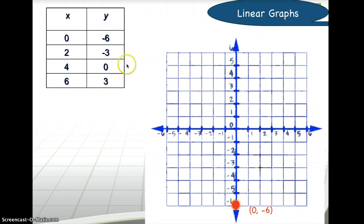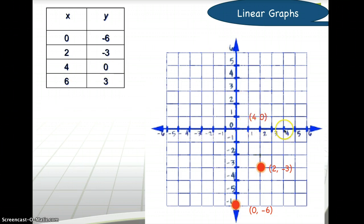At x equals zero and y equals negative six, we plot the point there. The second coordinate pair is two and negative three — x is two and y is negative three, so move down and plot the point. The third pair: x is four and y is zero, so find four on the x-axis and since y is zero you don't move up or down. The last coordinate is six and three — find six on the x-axis, then y equals three, and plot the point.